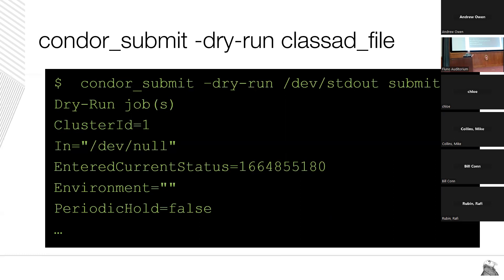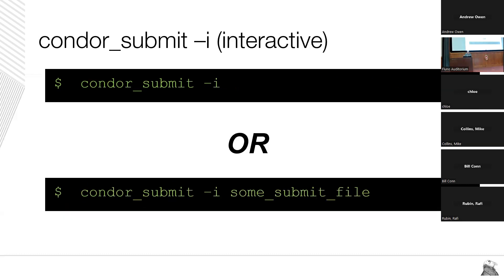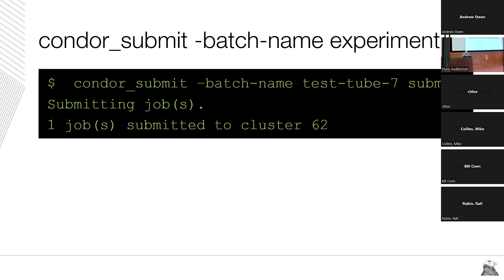Dry-run is probably not used as often as it could be by administrators who are debugging things. Another commonly underused option is condor_submit -i for interactive, which gives you an interactive shell on some random machine in your pool. If you want a specific machine, you can also pass it a submit file with requirements and file transfer. This is a super handy command for debugging what might happen if your job fails on a worker node but doesn't fail when run locally.